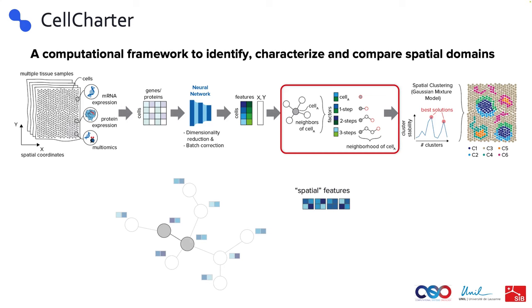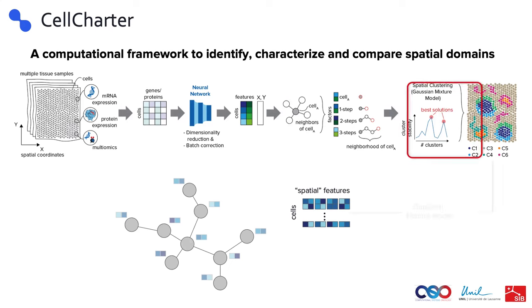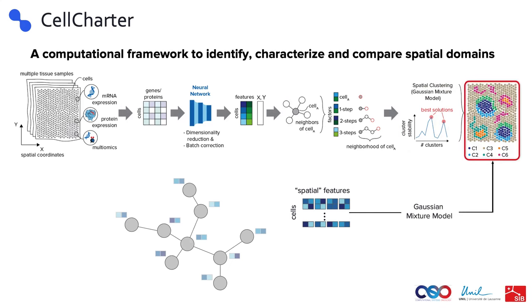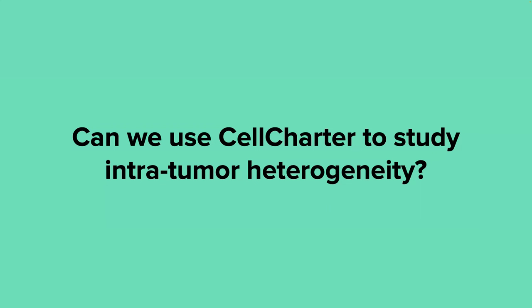We repeat this for every cell in the dataset and obtain a matrix of cells by this new set of features that includes information on the neighbors of every cell. Then we can use standard clustering on this matrix using a Gaussian mixture model to obtain our spatial domains. In my PhD, we're interested in studying intratumor heterogeneity — so can we use Cell Charter to characterize it?